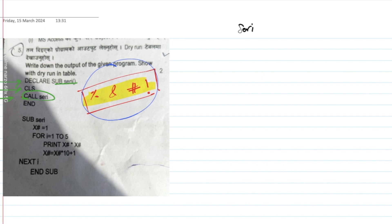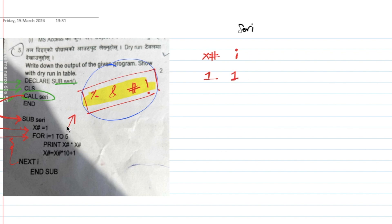We need to call the subroutine. Now for the dry run: for i equals to 1, we enter the loop. The i value is checked against the condition. The condition checks whether i is less than or equal to 5.